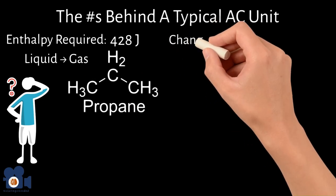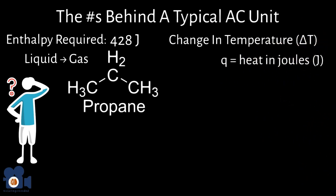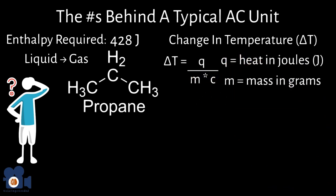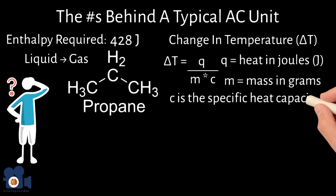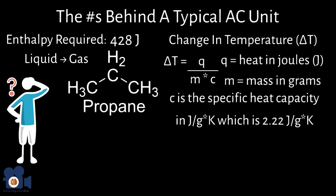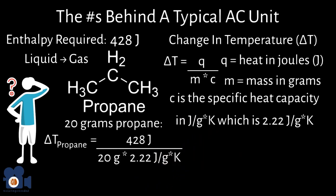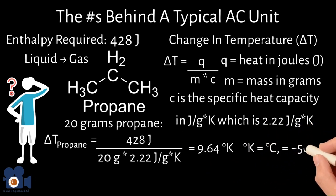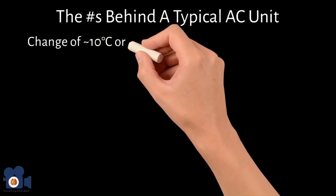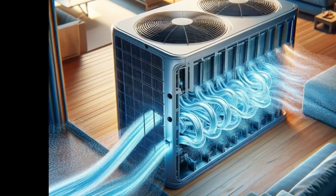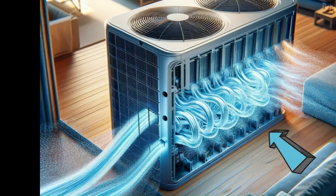To understand the temperature changes, we use the formula ΔT = q / (m × c), where q is heat in joules, m is mass in grams, and c is the specific heat capacity — 2.22 J/g·K for liquid propane. Plugging in for 20 grams of propane: ΔT = 428 / (20 × 2.22) ≈ 9.64 degrees Kelvin, which equals degrees Celsius — converting to Fahrenheit is close to 50 degrees. This change of approximately 10°C or 50°F is what allows refrigeration to work, because the AC unit blows air over the colder propane, cooling the air that pumps into your room.